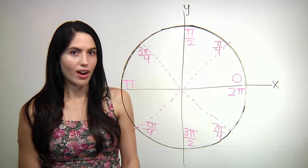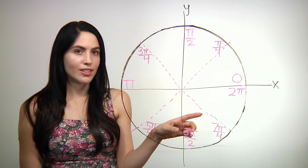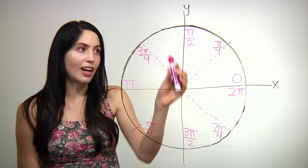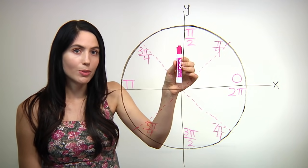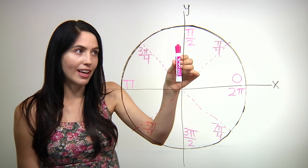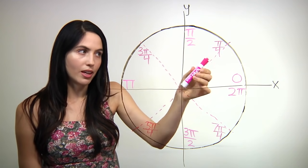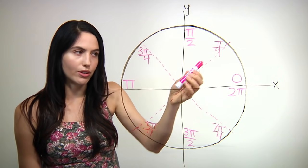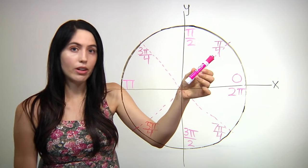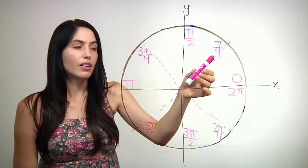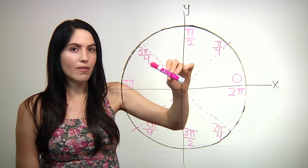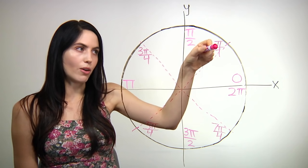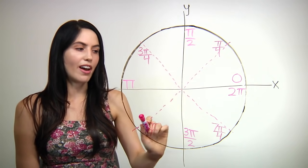Now let's look at the pi over four angles. Those other angles we just did divided the circle into four equal parts — these are going to divide it again. So if one quarter was pi over two, if we divide it again by two, we get pi over four. These ones are always in the exact center of the quarter circle. The first one is pi over four, then three pi over four, then five pi over four, then seven pi over four. Notice that pattern: one, three, five, seven.